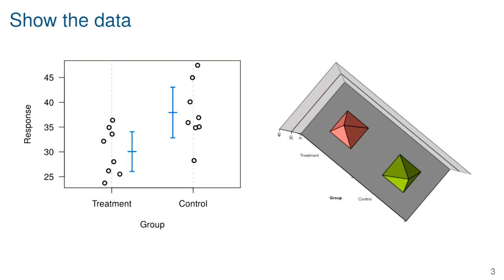When you have a small number of data points per group, it's best to show the actual data. You could do so while also showing the averages and a measure of uncertainty like a confidence interval. Principle number one: show the data.